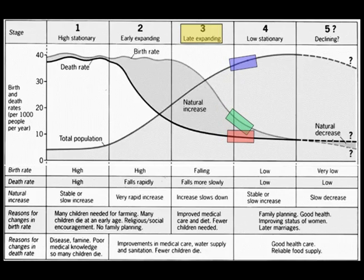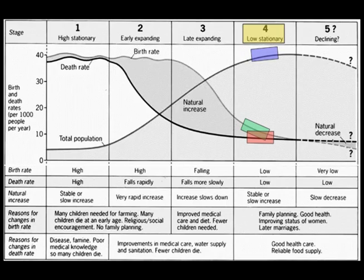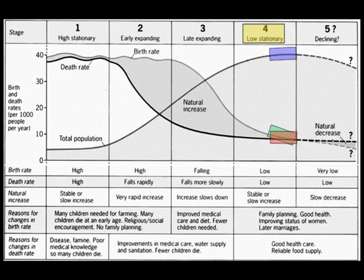Finally, when a country reaches the highest levels of development, it enters stage four of the demographic transition model. Birth rate drops to match the death rate. The rate of natural increase approaches zero, which is referred to as zero population growth. There are no longer enough children born to replace adults as they die, and a country's population may actually begin to shrink.